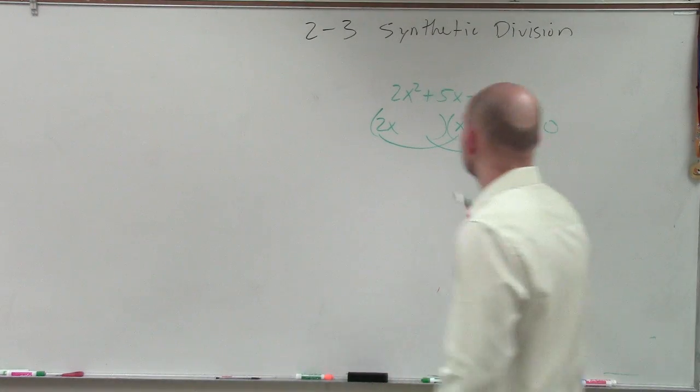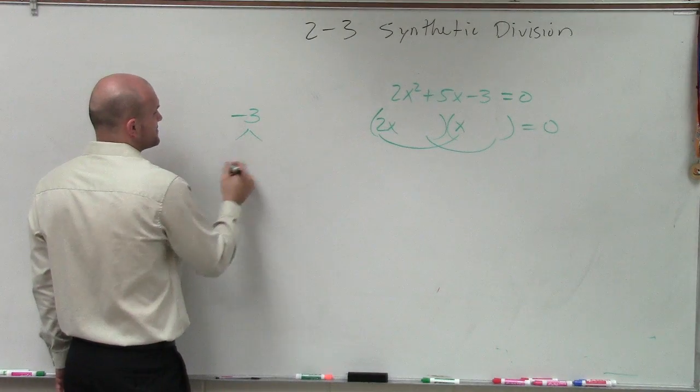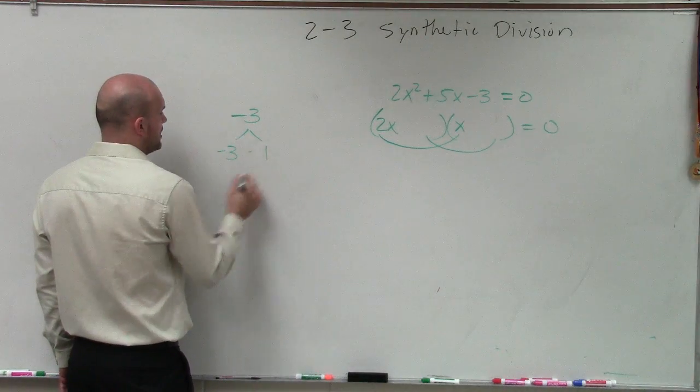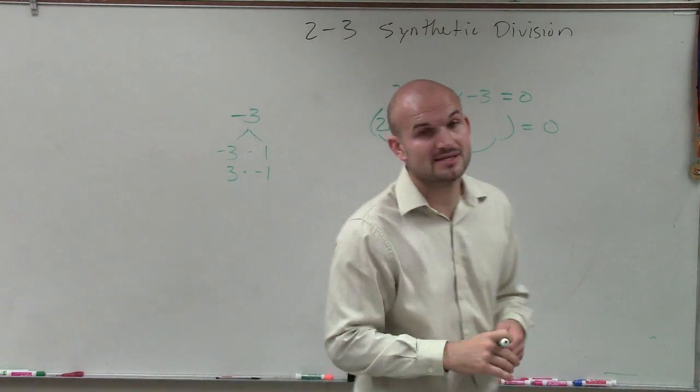Then we need to determine what two numbers can we multiply and give us negative 3? Well, for negative 3, we want to look at the positive and the negative. So we could say negative 3 times 1, or 3 times negative 1. Those are only possibilities.